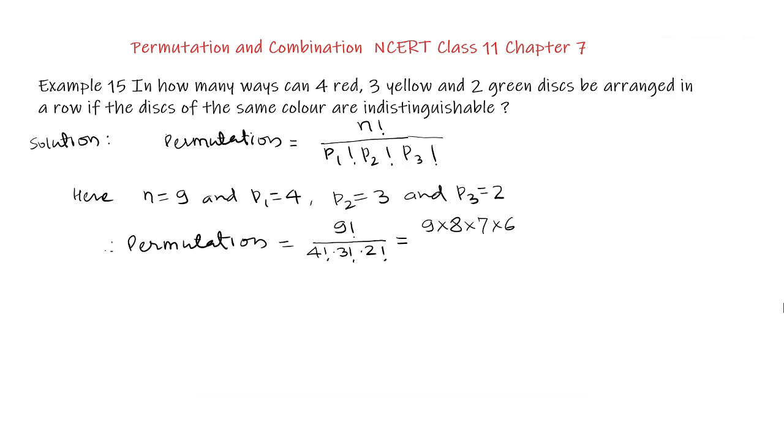3 factorial can be written as 3 × 2 × 1 and 2 factorial can be written as 2 × 1.